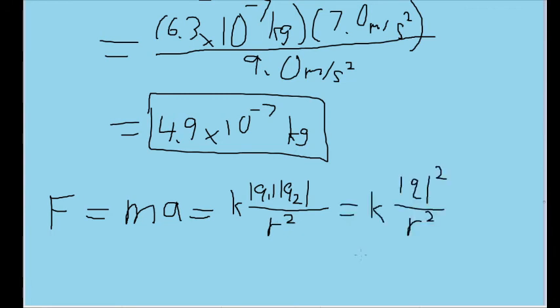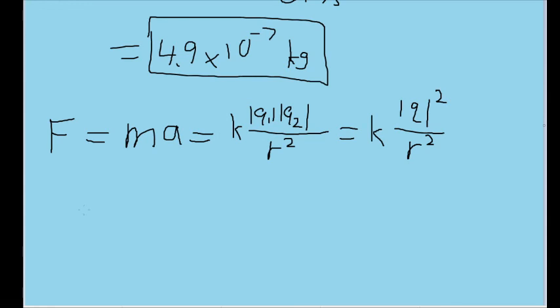Once again, the charges are equal, so I'm rewriting the charges as a single charge squared. We're solving for the charge, so let's use some basic algebra to isolate the charge. We'll divide all sides by K, multiply all sides by R squared, and then take the square root to get a single absolute value of the charge on its own. And here's the formula we come up with.